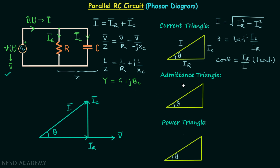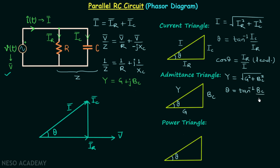Moving on to the admittance triangle: one side is admittance Y, one side is susceptance, and one side is conductance. From the triangle, admittance Y equals the square root of (conductance² + susceptance²). The power factor angle theta equals tan⁻¹(susceptance / conductance), and the power factor cos theta equals conductance over admittance — and it will be leading.